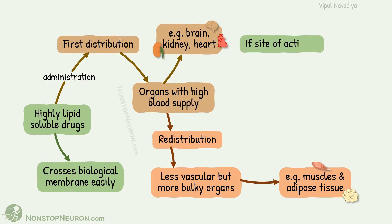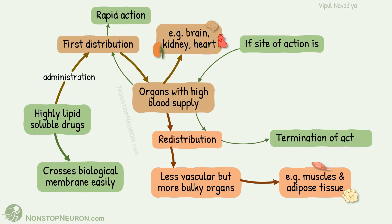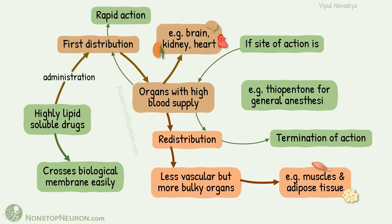If the site of action of the drug is an organ with high blood supply, the first distribution produces rapid action. But soon, the redistribution leads to termination of action. For example, thiopentone used for general anesthesia.